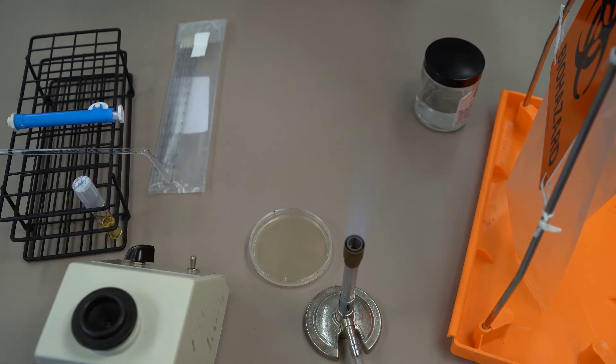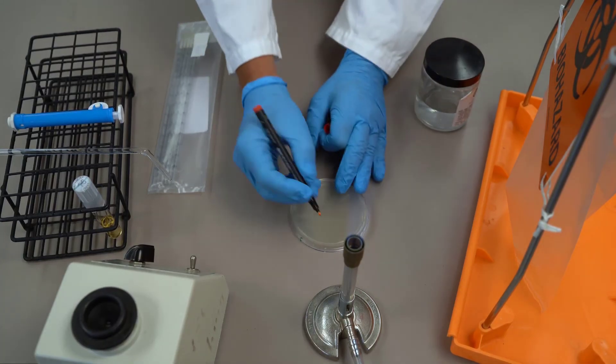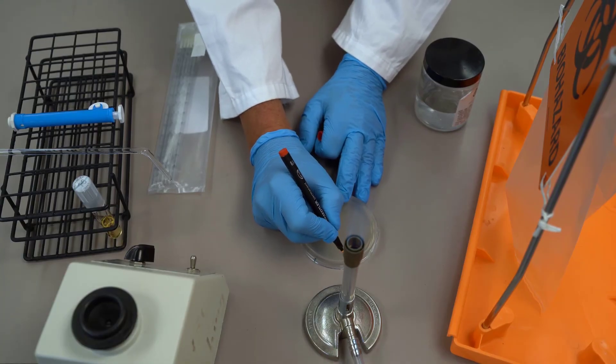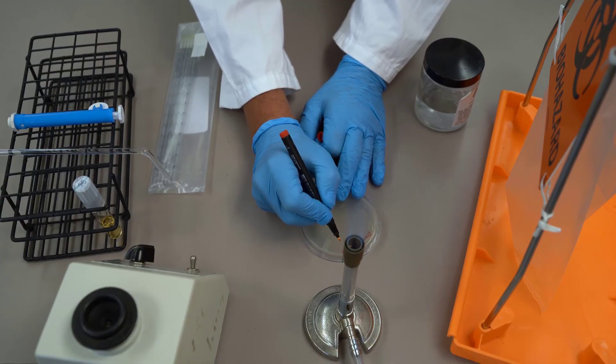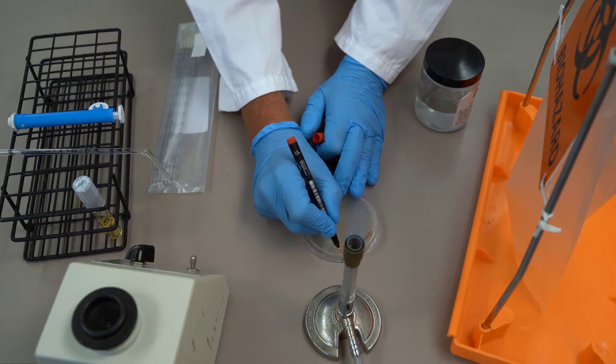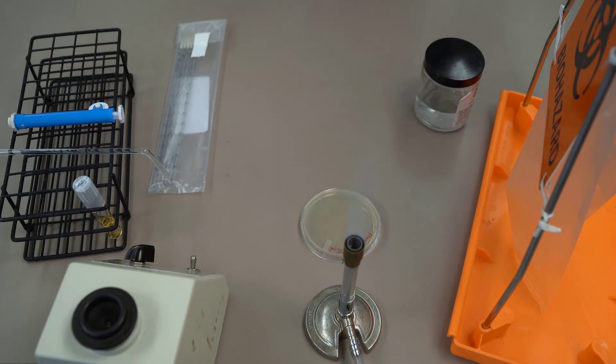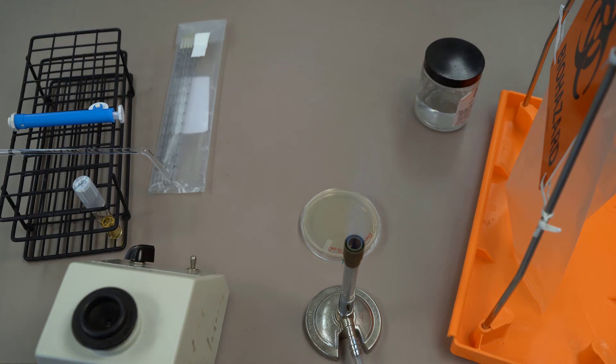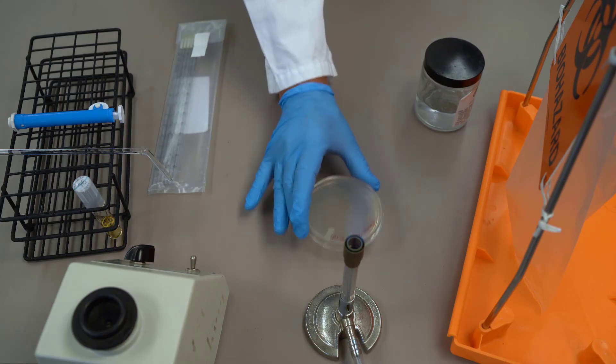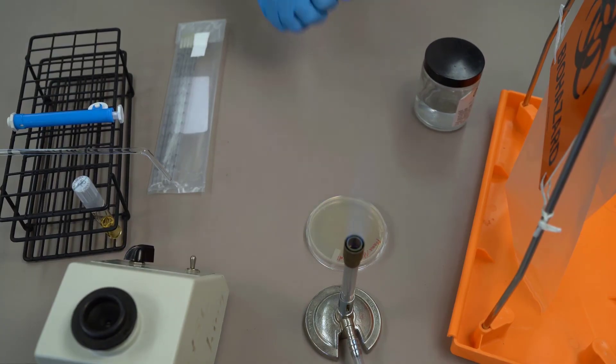And now we're almost ready to incubate this plate, except we still need to label it. So we put our name, date, and other useful information depending on what the purpose of your spread plate is, such as the type of culture perhaps. And we always label the plate on the outside edge of the plate. And we put the plate in upside down so that condensation does not drip onto our growth in the incubator.